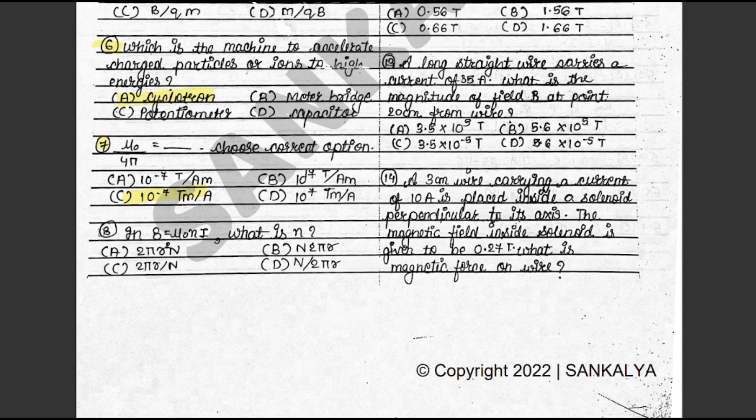Question 8: In B = μ₀ni, what is N? The answer is D: N upon 2πR. This is on page 153.